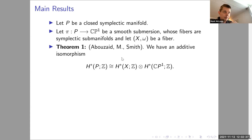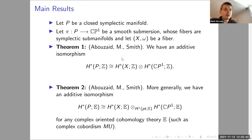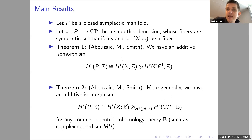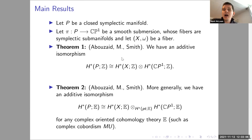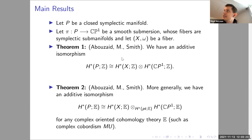We have another theorem, Theorem 2, which is a more general version of Theorem 1. It says the cohomology of this fibration splits: it's the cohomology of the fiber tensor the cohomology of the base. This holds for any complex oriented cohomology theory — essentially any generalized cohomology theory where the Eilenberg–Steenrod axioms hold except the dimension axiom, and where Chern classes make sense.